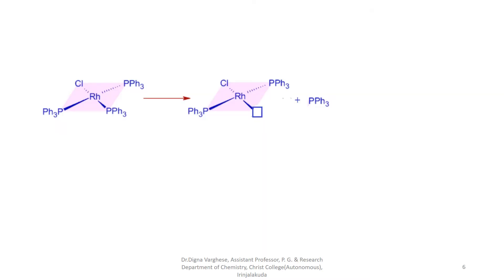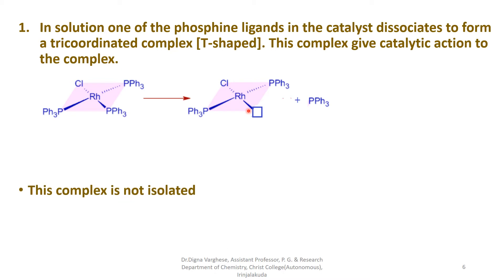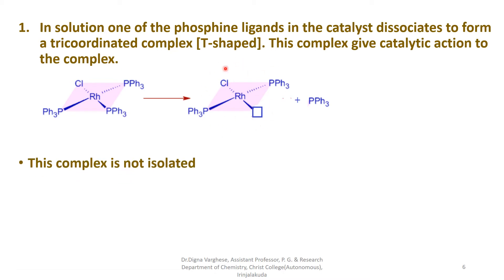Here we can see the mechanism in detail. In step one, in solution, one of the phosphine ligands dissociates from the Wilkinson catalyst — which is chlorotris(triphenylphosphine)rhodium — forming a vacant coordination site. The rhodium complex becomes a tricoordinated complex having T-shaped geometry. This complex provides the catalytic activity. The tricoordinated complex is not isolated.